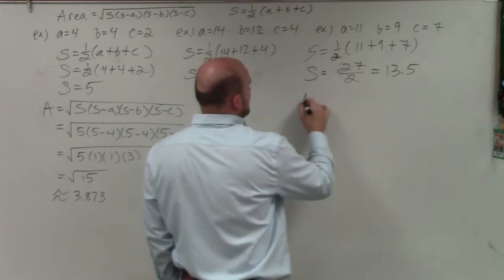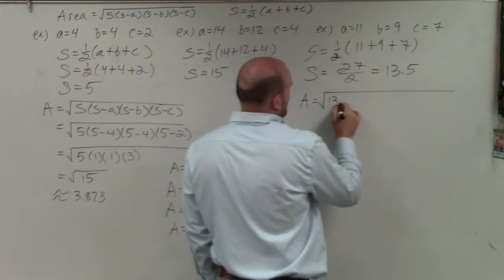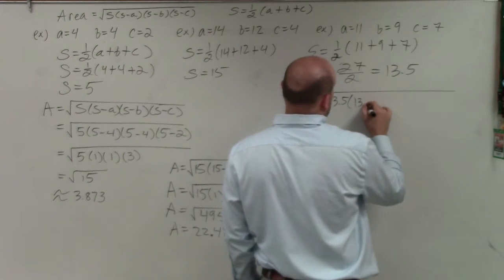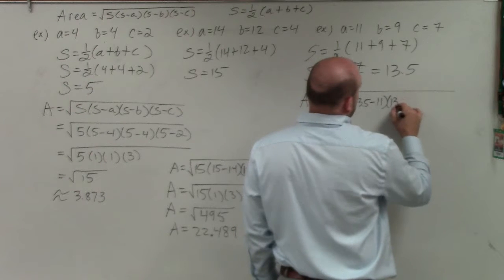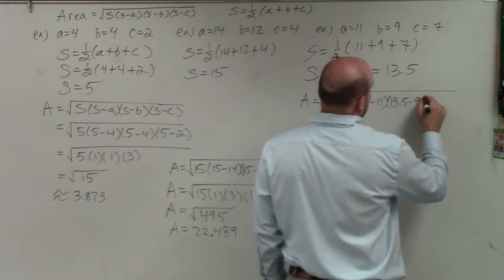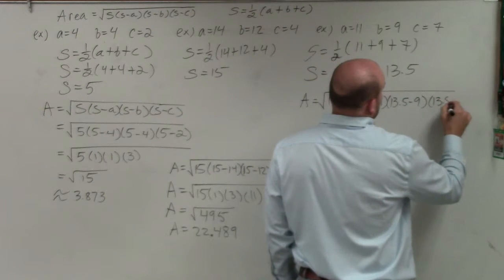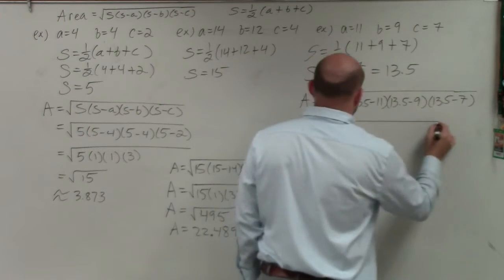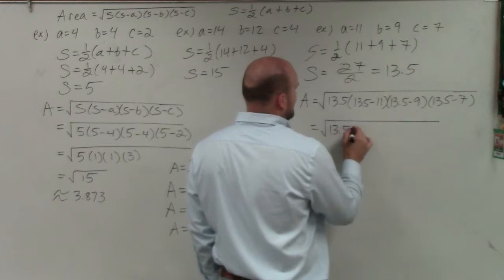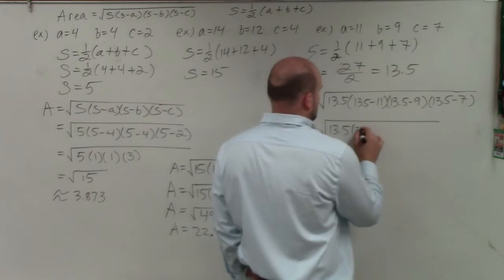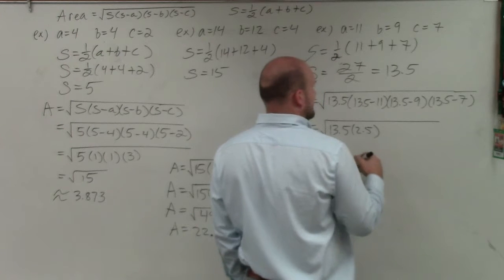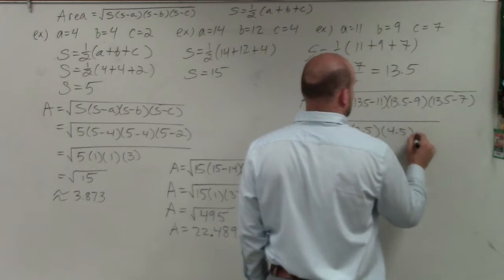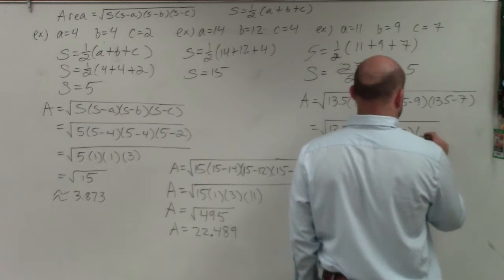Okay, so now we have our area, which is equal to 1 half, 13.5 times 13.5 minus 11 times 13.5 minus 9 times 13.5 minus 7. So that's equal to, see, 13.5, that's going to be 2.5 times 2.5. That's going to be times 4.5, and that's going to be times 6.5.